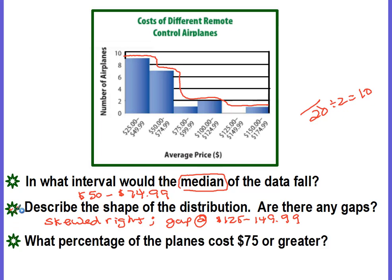What percentage of the planes cost $75 or greater? Okay, we need to figure out how many planes cost $75 or greater. So here's my $75. So I want to include all of these bars. So we have one plane for this interval, two planes, one plane. So it's a total of four planes.